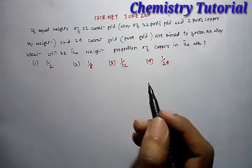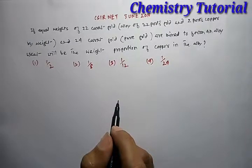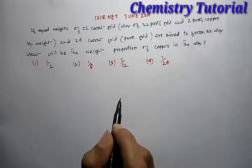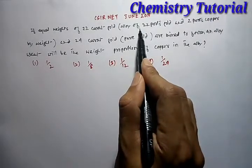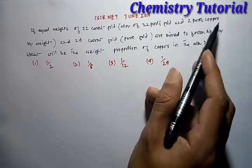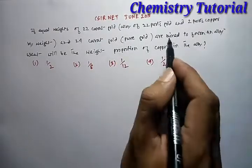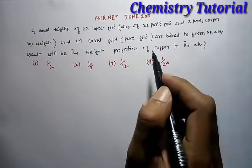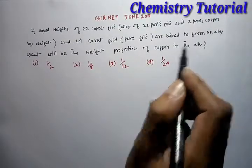This question appears in J7H, June 2017. The question is, if 2 equal weights of 22 karat gold per alloy, which is the alloy of 22 parts of gold and 2 parts of copper by weight, and 24 karat gold are mixed to form an alloy, what will be the weight proportion of copper in the alloy?